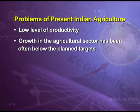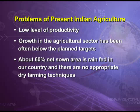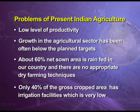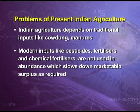The second problem is that growth in the agricultural sector has often been below plan targets. There are regional imbalances — growth is concentrated in areas like Punjab, Haryana and western Uttar Pradesh. About 60 percent of net sown area is rain-fed, with no appropriate dry farming techniques. Only 40 percent of the gross cropped area has irrigation facilities. Indian agriculture still depends largely on traditional inputs like cow dung and manures, while modern inputs like pesticides and chemical fertilizers are not used in adequate quantities.